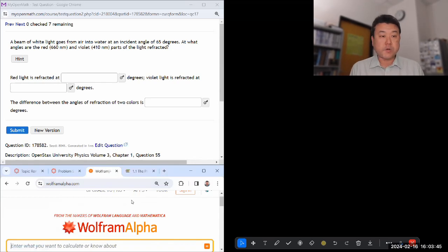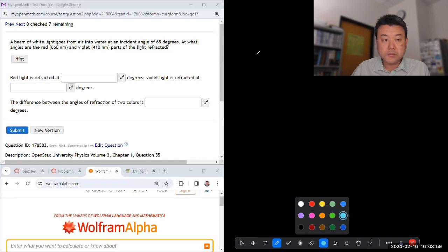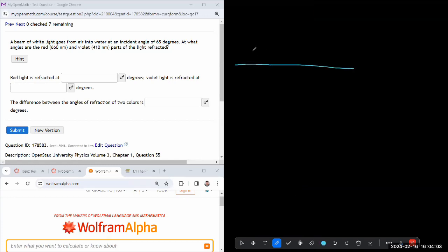All right, so this question says a beam of white light goes from air into water. Okay, let me just sketch it out to make sure I fully understand the situation. So I have some boundary between air and water. Let me just let this represent that.